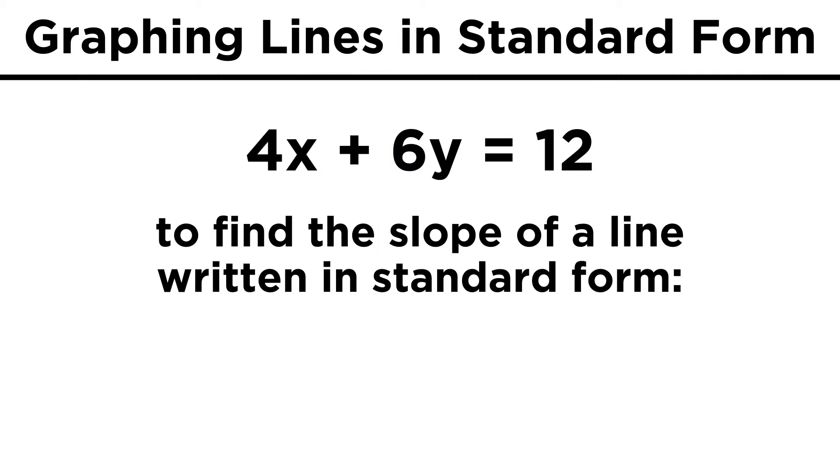If we have a line in standard form, and we want to know the slope, there are two things we could do. We could take the two intercepts, which represent points on the line, and use the coordinates of those points to calculate the slope.